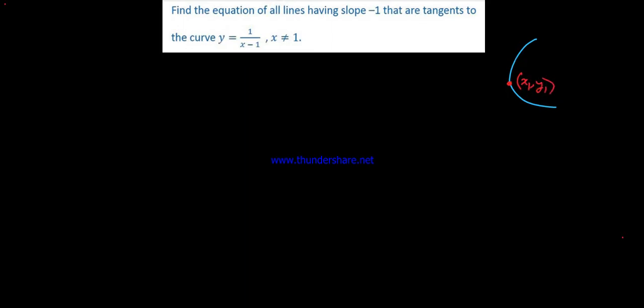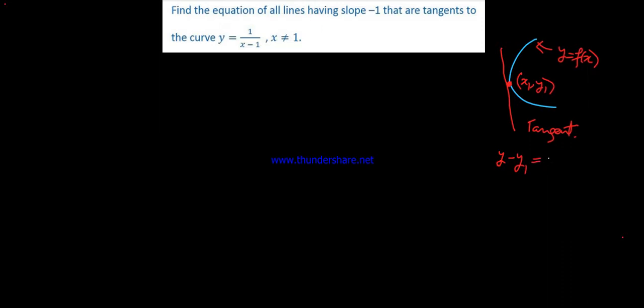At any point x1, y1 on a curve y = f(x), the equation of the tangent line is y minus y1 equals slope times x minus x1, where the slope is given by the derivative dy/dx evaluated at that point.